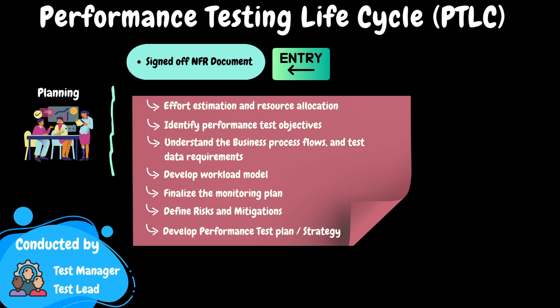Ultimately, based on the information gathered, we should develop a detailed performance test plan or strategy document. This document must undergo a thorough review process involving all application and project stakeholders. Typically, a test plan review meeting will be scheduled for this purpose, during which the team lead will present the document to the stakeholders. Following their agreement with the plan, they will proceed to provide their formal sign-off.